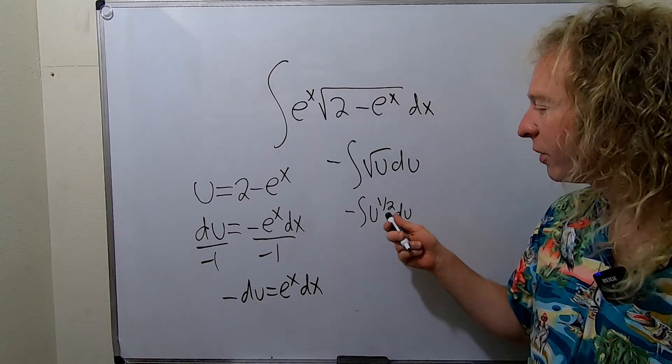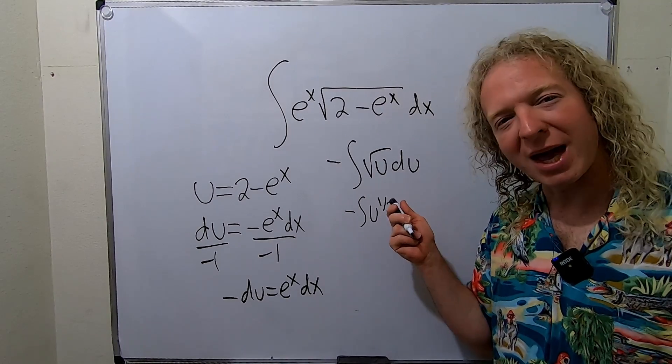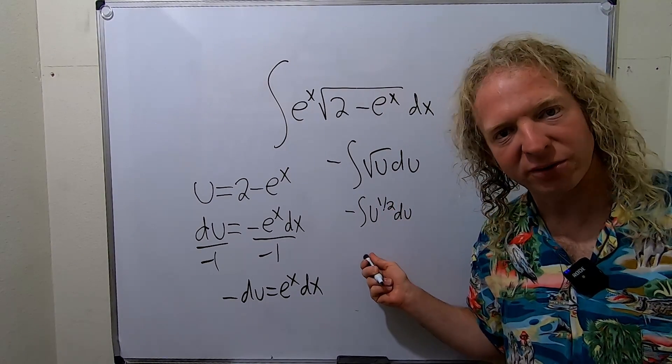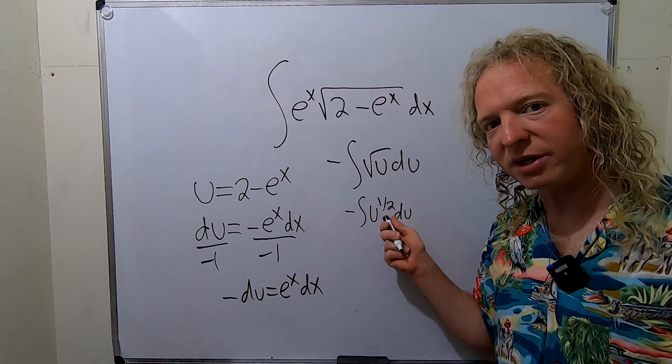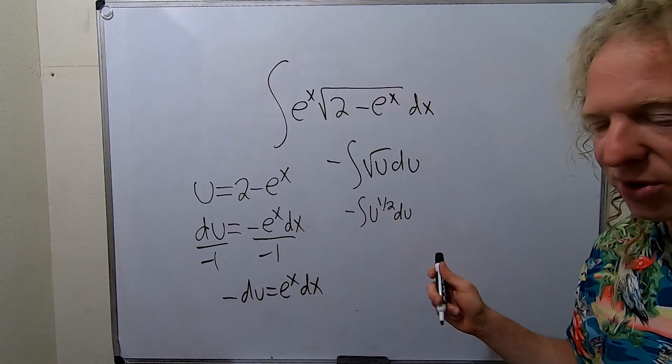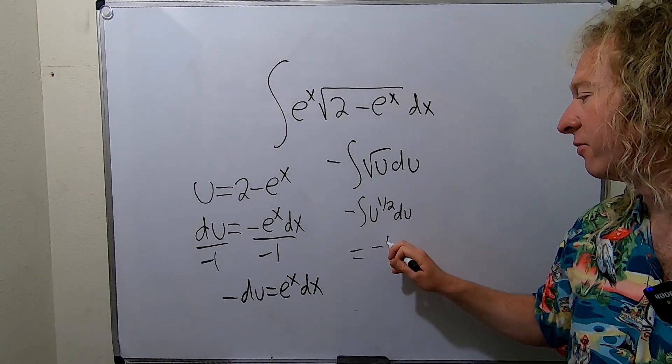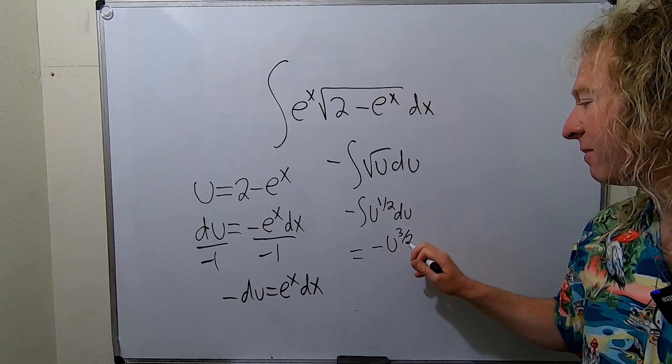Alright so now we can integrate. So all we have to do is use the power rule. So we add 1 and divide by the result. So 1 half plus 1 is 3 halves. It's 1 half plus 2 halves. So this is negative 3 halves. And then we're dividing by 3 halves.